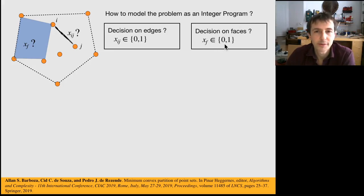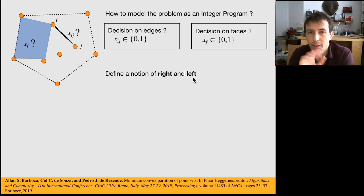And before explaining the model, stating the model using this variable, I must explain or define the notion of right and left. So this is short and this is needed to understand the model. So let me go through it.